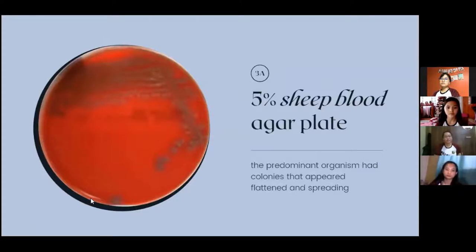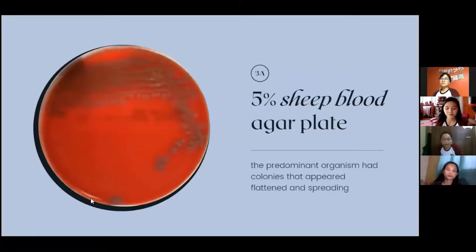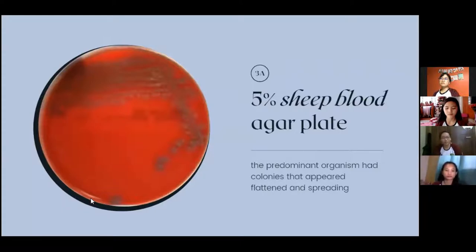On the 5% blood agar plate, the predominant organism had colonies that appeared to be flattened and spreading, which indicates no hemolysis.